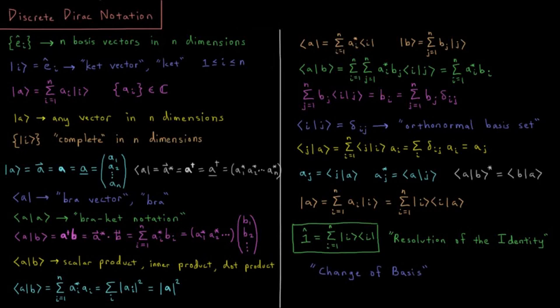This video will discuss discrete Dirac notation in linear algebra, as opposed to the continuous Dirac notation used in some chapters of the Quantum Chemistry playlist. This will be pretty much analogous to that notation introduced in the Principles of Quantum Mechanics chapter, but applied to matrices and vectors.